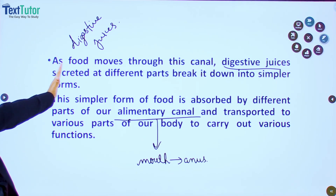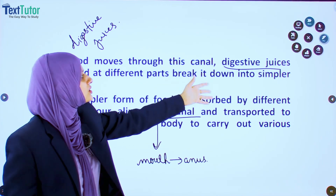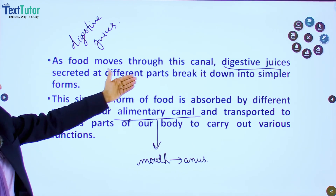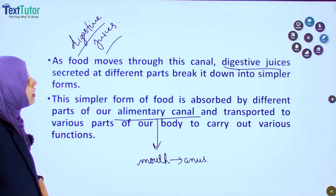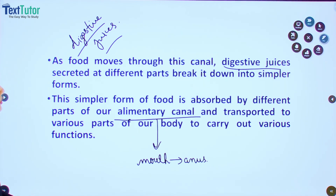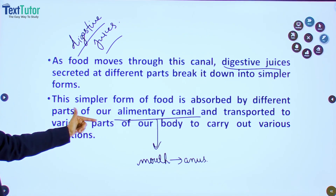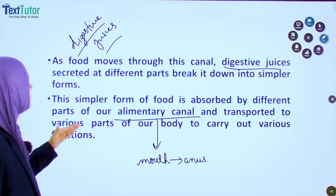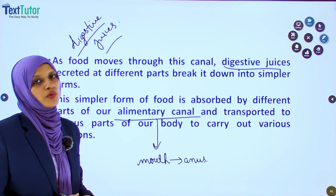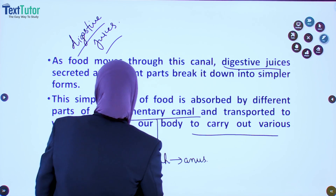Digestive juices help in the breaking down of food particles into simpler forms. These simpler forms are transported through the alimentary canal, absorbed by different parts of the alimentary canal, and transported to various parts of our body to carry out different functions. This is the introduction of the chapter 'Life Processes in Animals.'